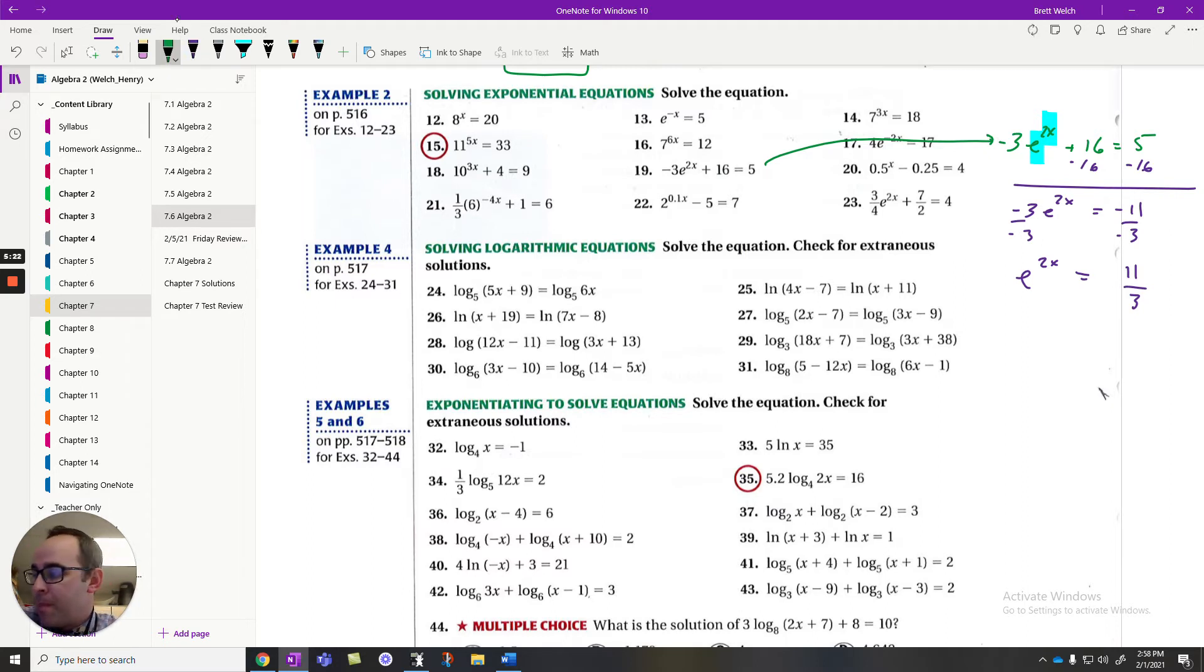Now that the base is alone with its exponent, I can get rid of that base by applying a logarithm. I want to make sure my logarithm matches the base of the problem I'm looking at. Since this is a base e, I want to use the natural log. That natural log will cancel the e and bring my exponent down to a regular equation. So 2x now equals the ln of 11 thirds.